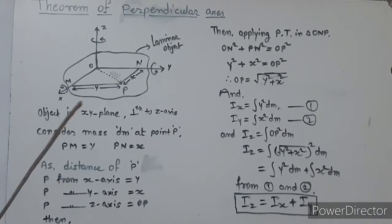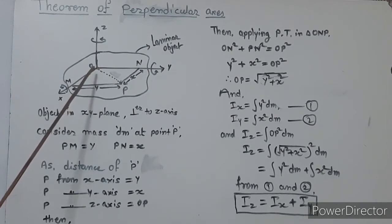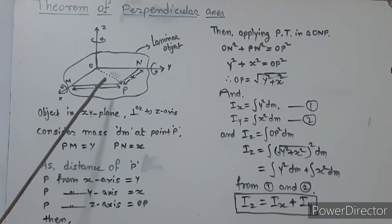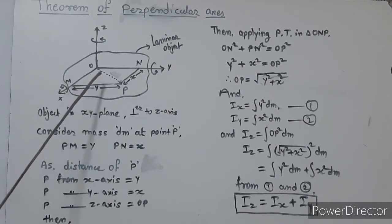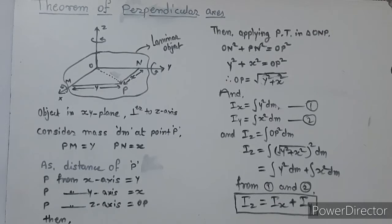Now, for this laminar object, let us consider any point O through which the axis passes, around which the object rotates. We consider the axis of the body through which the body moves or rotates.